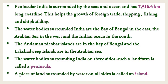Peninsular India is surrounded by seas and ocean and it has a 7516.6 km long coastline. This helps the growth of foreign trade, shipping, fishing, and shipbuilding. The water bodies which surround India are the Bay of Bengal in the east, the Arabian Sea in the west, and the Indian Ocean in the south. The Andaman Nicobar Islands are in the Bay of Bengal and the Lakshadweep Islands are in the Arabian Sea. Children, observe the map of India where you can locate the water bodies surrounding India on three sides.